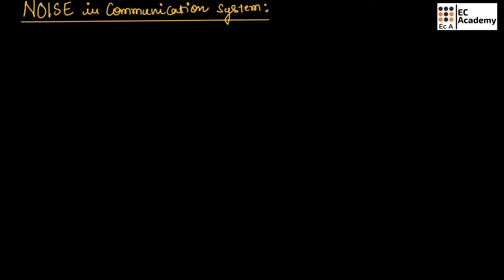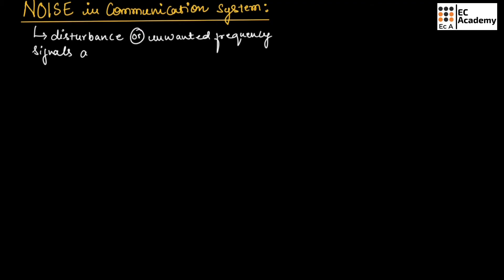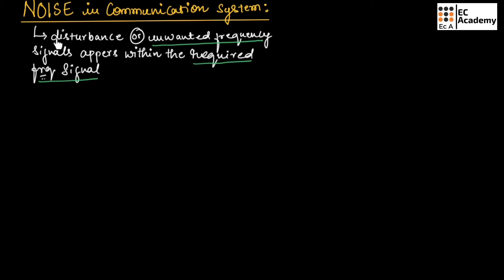Let us define noise in a communication system. Noise is a disturbance or unwanted frequency signal that appears within the required frequency signal. So, unwanted frequencies that are present in the required frequency signal are called noise.